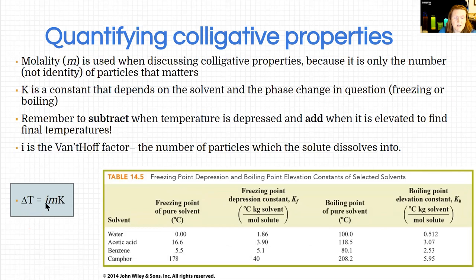So the change in temperature, delta means change, is the number of particles. So we talked about that today. Ionic things have more than one particle. Covalent things just have one.